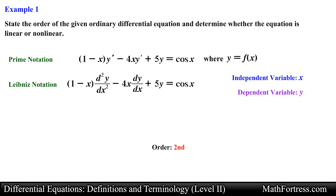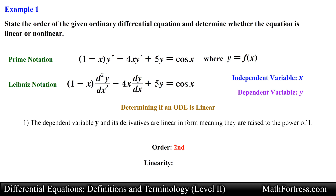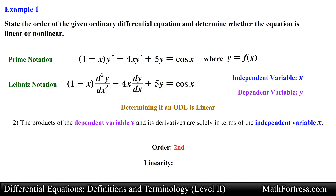Next we need to identify if the ODE is linear or nonlinear. The procedure for determining if an ODE is linear is as follows. First, check to see if the dependent variable y and its derivatives are linear in form, meaning they are raised to the power of 1. Looking at y and its derivatives, we see they are all raised to the power of 1. If they were raised to a power other than 1, like 2 or negative 3, the ODE would be nonlinear. Next, check if the products of the dependent variable y and its derivatives are solely in terms of the independent variable x.